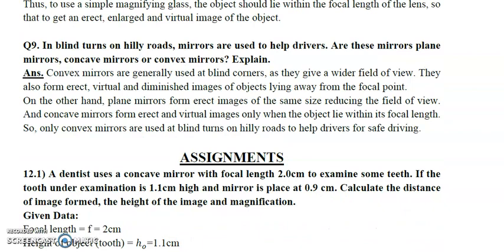The next and last question: At blind turns on hilly roads, mirrors are used to help drivers. You have to identify whether those mirrors are concave, convex, or plain. A convex mirror is a diverging mirror — it gives a wider field of view. Its image is erect and virtual, and it shows objects that are far away. That is why convex mirrors are used at blind turns.